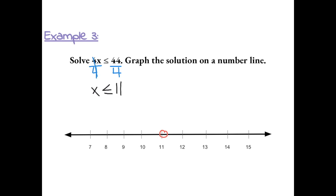So we're going to put a closed circle at 11 because it's less than or equal to 11, and then shade all numbers less than 11 on a number line.